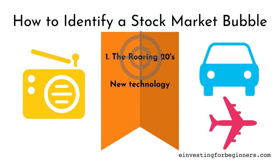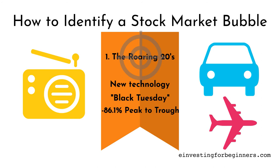Up until what they call Black Tuesday — the stock market crash of 1929 — the market was going really strong. Then Black Tuesday hit, the market took a tumble, and it took a long time to recover, which started the Great Depression. From its high to its low, the S&P 500 went from 31.86 to 4.4 — a loss of 86.1%. It took 34 months to recover. This was a huge stock market bubble that hurt a lot of investors and was the first big US example of the dangers of buying stocks at high valuations.